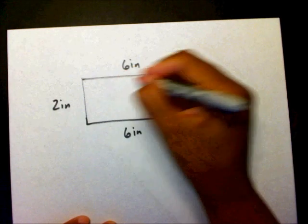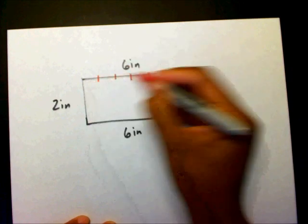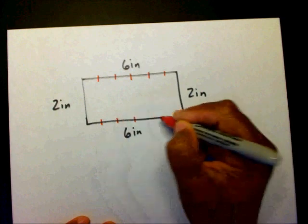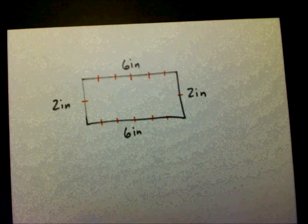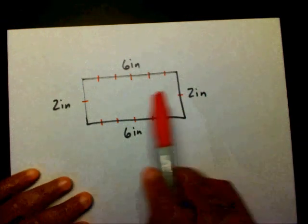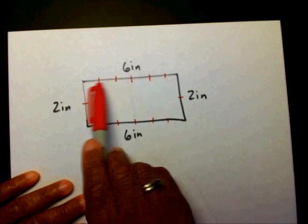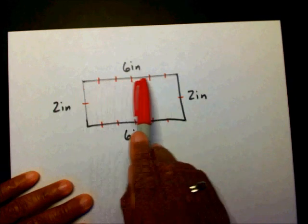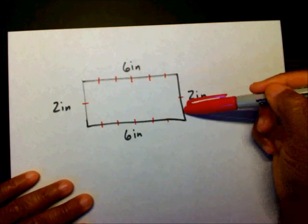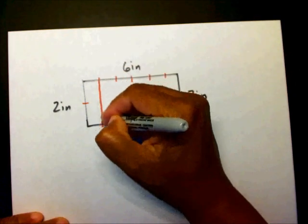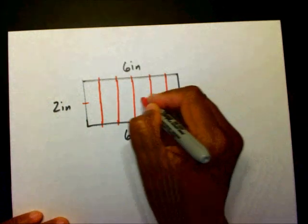I'm going to divide each side into inches. Okay, so since this side is 6, I divided it into 6 different inches. That's 1 inch, inch, inch, inch, inch, and inch—6 inches. And this is 2 inches, 1, 2. Okay, so what I'm going to do now, I'm going to divide the rectangle up into sections.